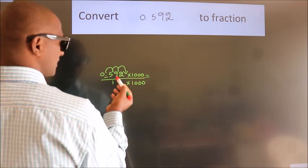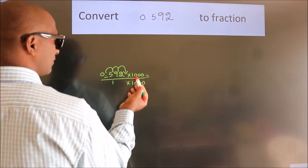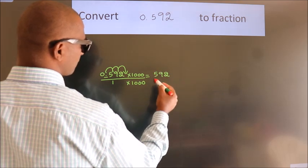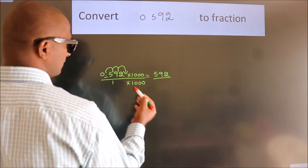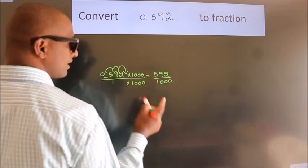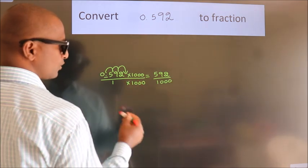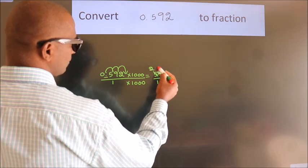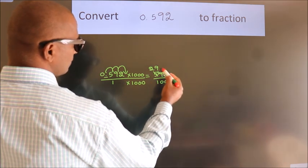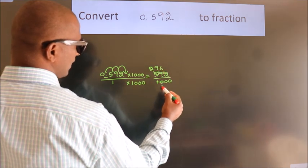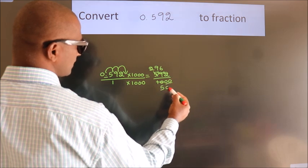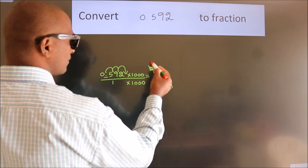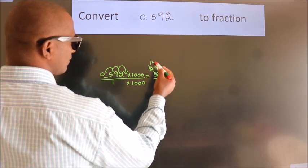Next, 0.592 times one thousand gives five hundred ninety-two. One times one thousand gives one thousand. Now I simplify by dividing by two. I divide by two again.